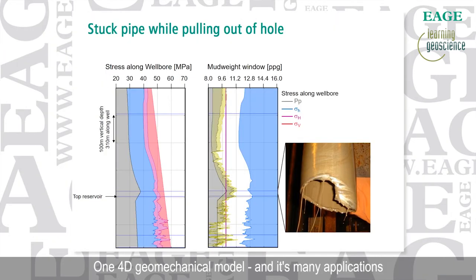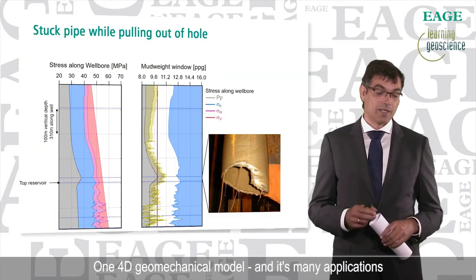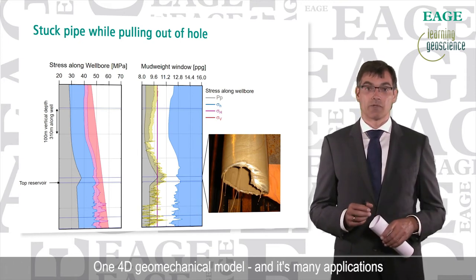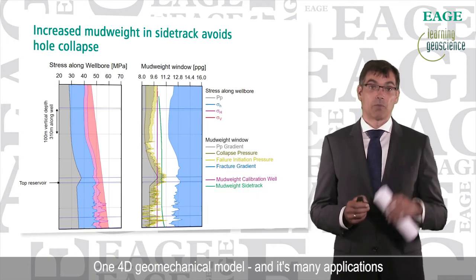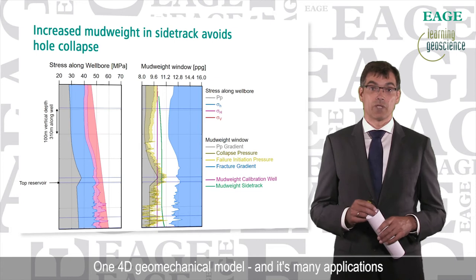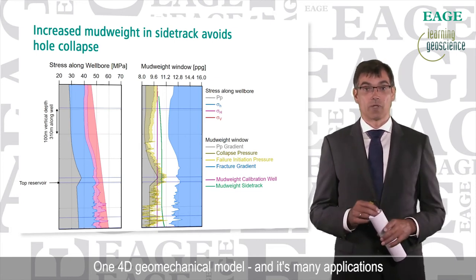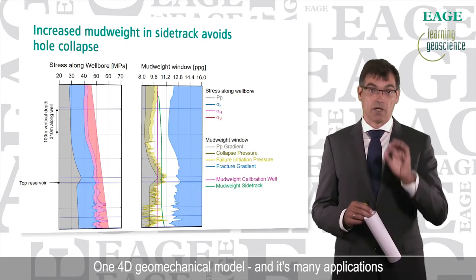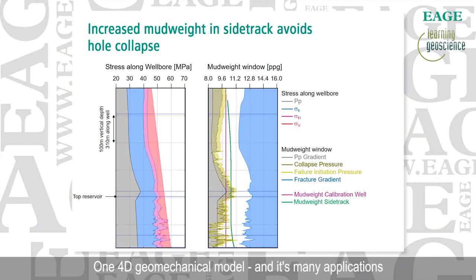There was a good reason why the gas injector was being drilled, so the operator decided to drill a sidetrack. Plotting the mud weight used in the sidetrack as a green curve, the well was drilled successfully. There were some issues drilling through the seal — the green curve intersects the yellow and mauve curves slightly, meaning there were breakouts in the wellbore wall, which could be handled by good hole-cleaning practices.